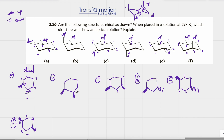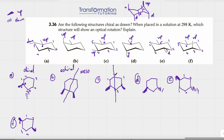For structure B, instead of a wedge and a dash we have two wedges. In this case there is a line of symmetry that cuts the molecule into two identical halves. Even though there are two chiral carbons, the molecule is achiral — it is a meso compound. For structure C, both carbons are chiral, and there is a vertical line of symmetry making the two halves identical, so C is also achiral — another meso compound.